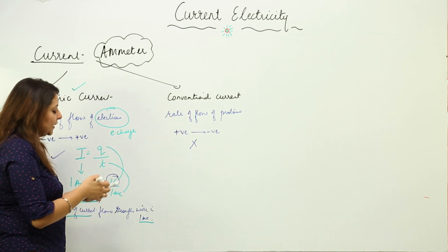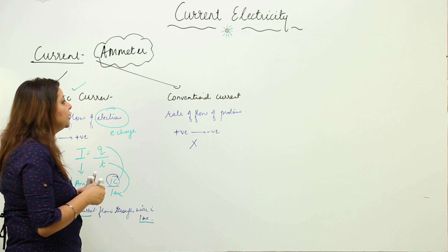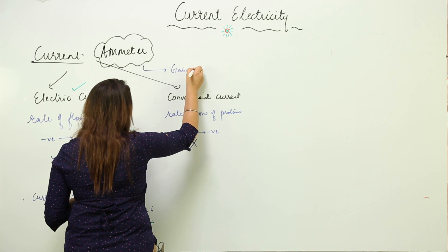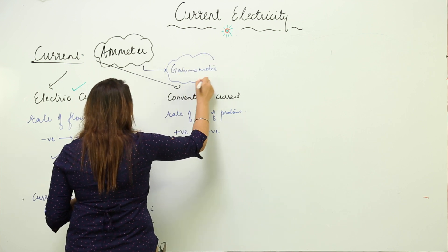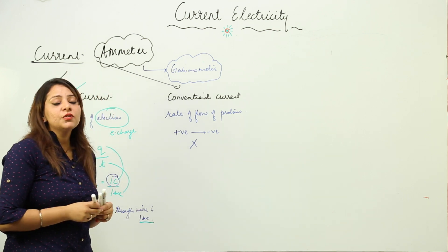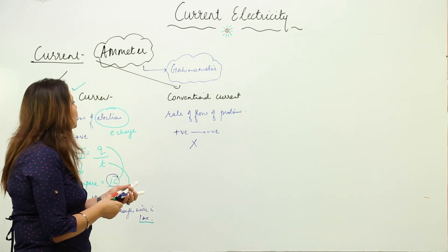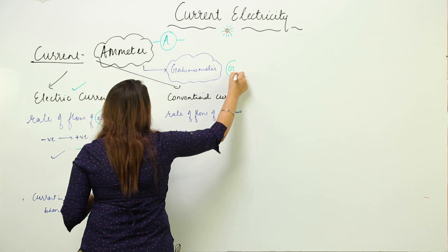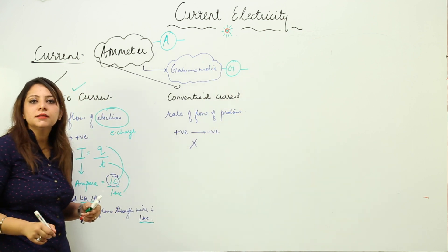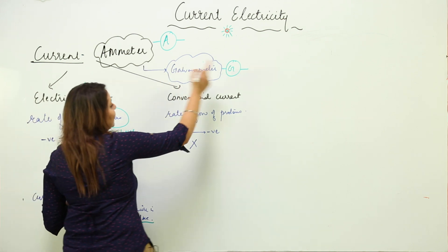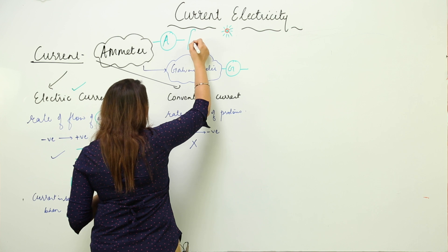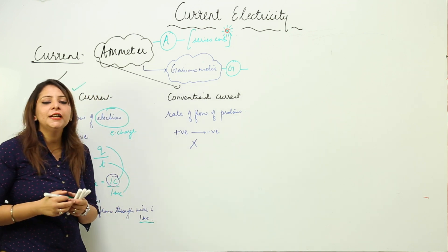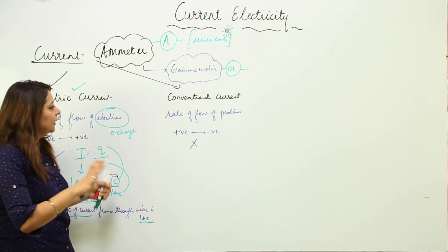Ammeter is generally used to measure current, but if we wish to measure very small or induced current, we use a galvanometer instead. The galvanometer is also an instrument used to measure current, but for very small currents. In a circuit, we generally use the ammeter. The symbol for ammeter and galvanometer are shown on the board. The ammeter is connected in a series combination — voltmeter, as mentioned, is connected in parallel.